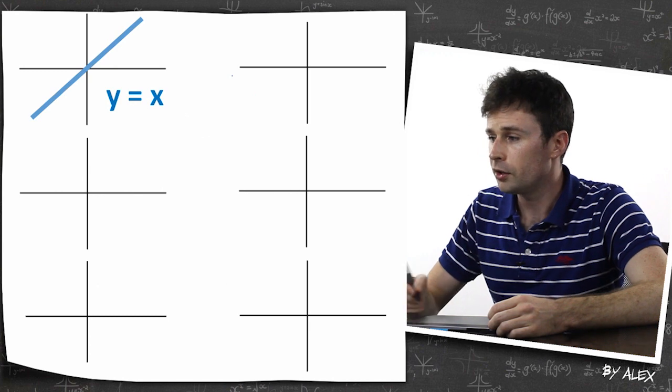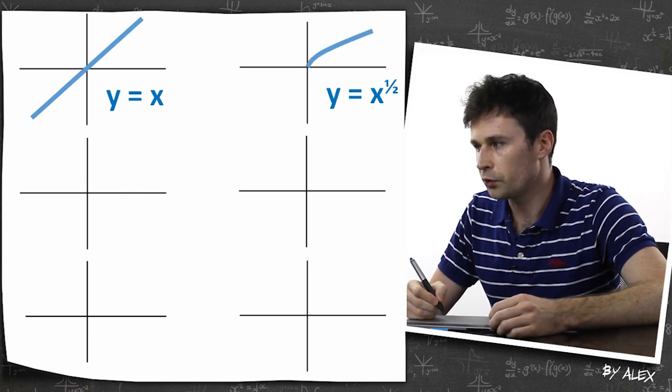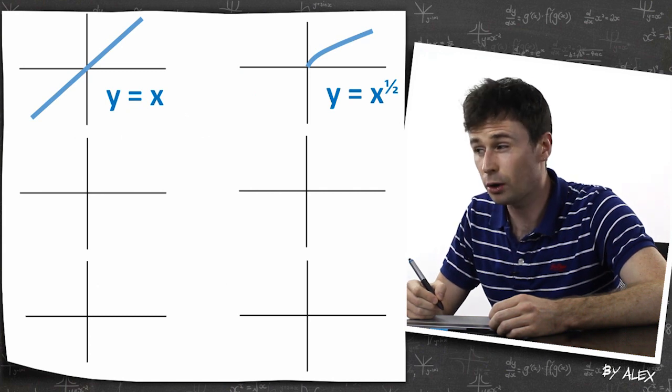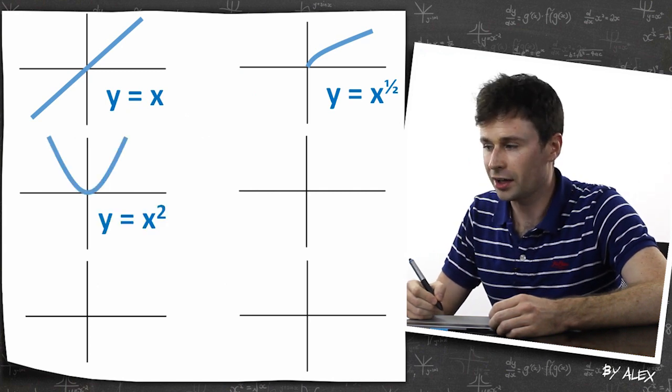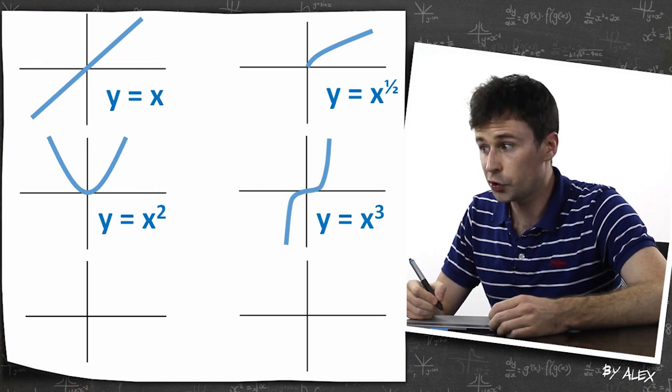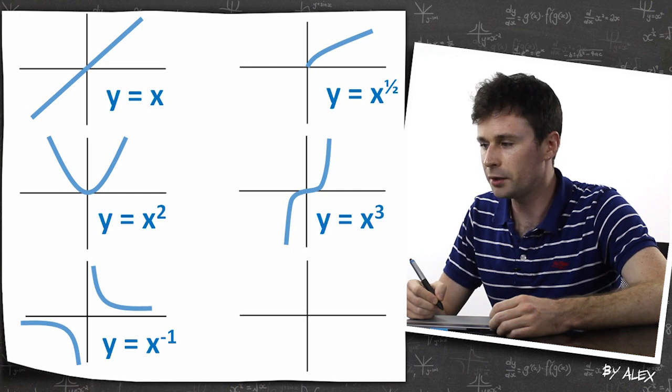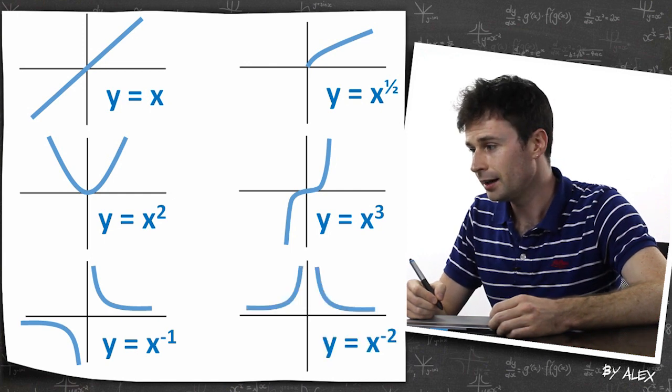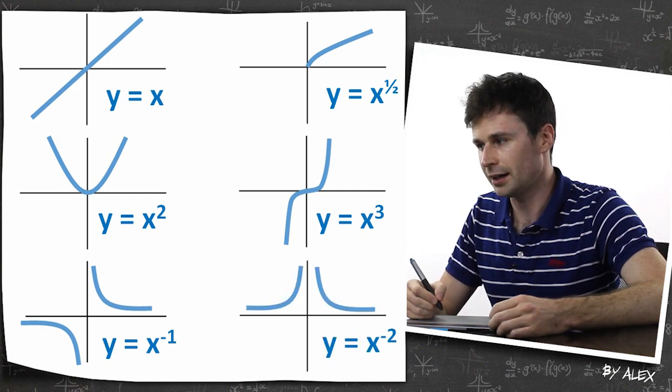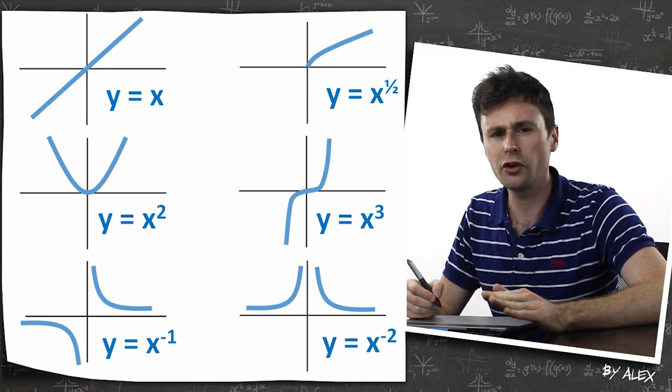So a list of functions. This is y equals x, seen that one before. This is y equals x to the power of half, we will go over that one. y equals x squared, hopefully we're familiar with that. y equals x cubed, which we will go over later as well. y equals x to the power of negative one, and y equals x to the power of negative two. So these are all just basic shapes. Just think of them as shapes for the time being, and they all work around the same formula.